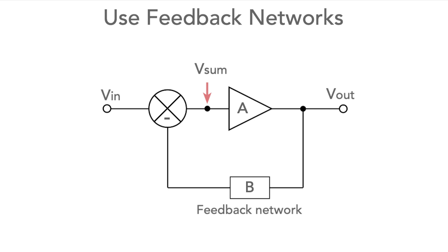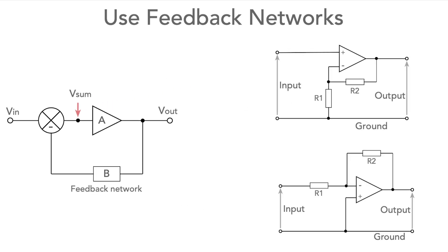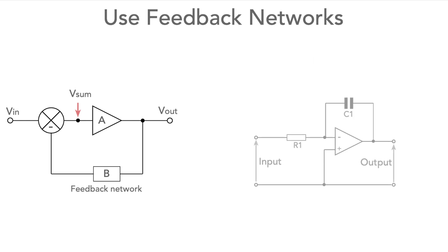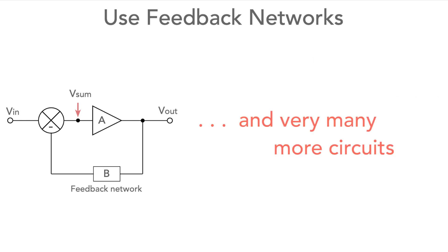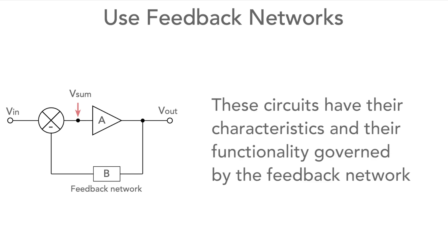The next point is to make sure you use the feedback network and general topology to give you the response you want. The feedback network can be configured to give the right response: amplifiers with inverting and non-inverting characteristics, low pass filters, high pass filters, integrators and a huge amount more. All of these circuits have their characteristics controlled by the feedback network, and we have details of a good number of these on our website.